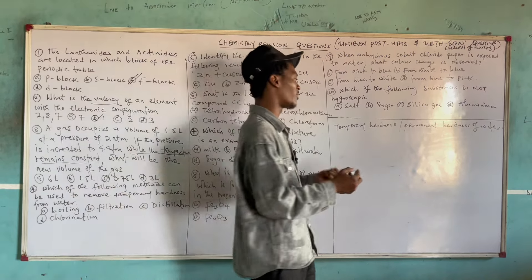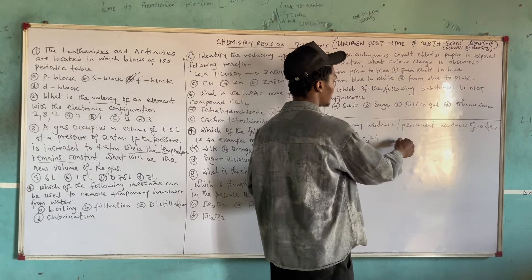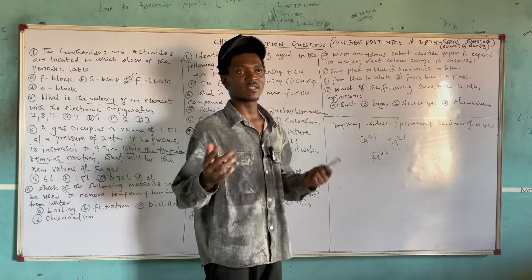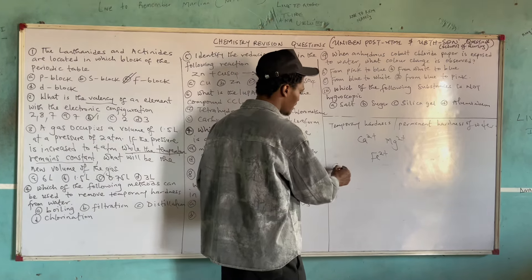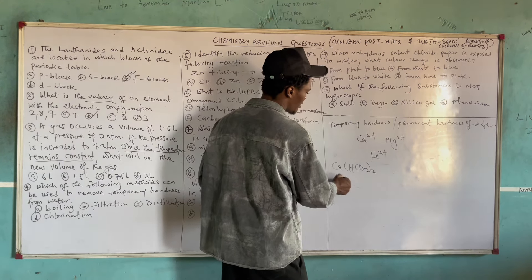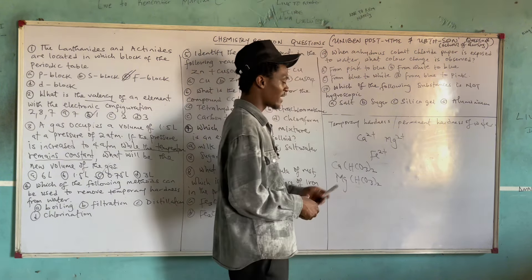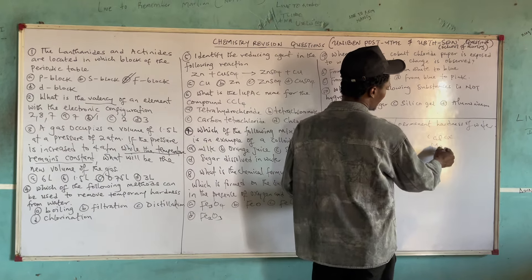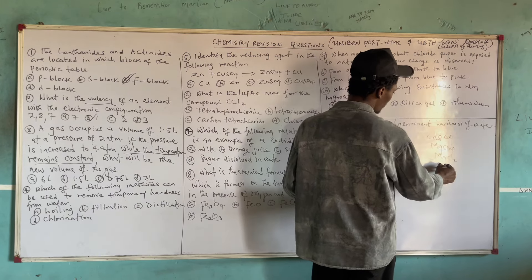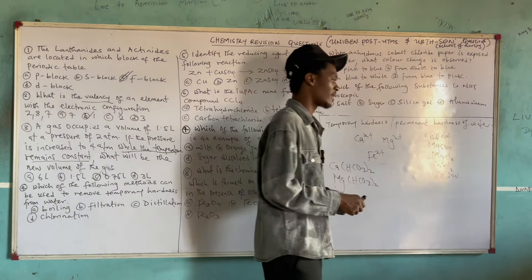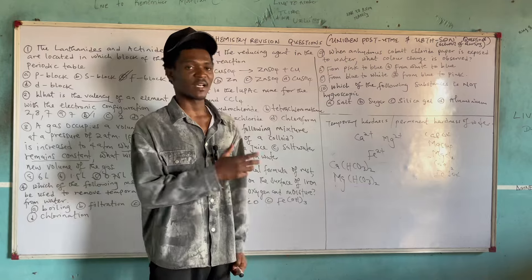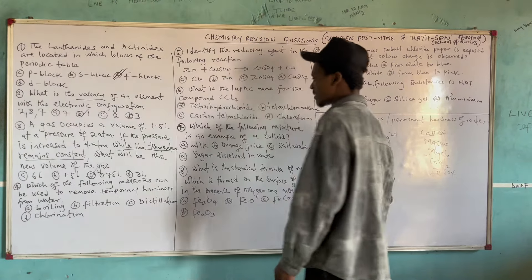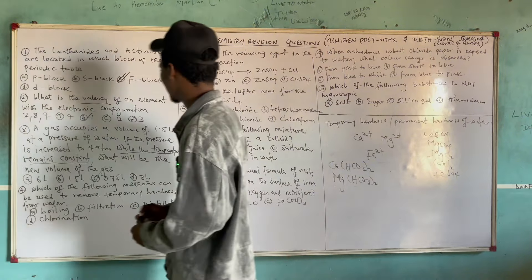Compounds causing temporary hardness are the hydrogen carbonates of calcium — Ca(HCO₃)₂ — and magnesium — Mg(HCO₃)₂. For permanent hardness, it is caused by calcium sulfate, magnesium sulfate, magnesium chloride, calcium chloride, and iron sulfate. These compounds are stable to heat, so they cannot be removed by boiling. Since temporary hardness compounds are unstable to heat and decompose when boiled, the correct answer is boiling.